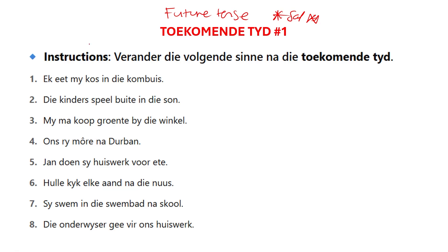I'm going to start by saying that, remember this is our sentence structure: STOMPI — verb 1, verb 2, subject, verb, time, object, manner, place, verb 2, and infinitive.